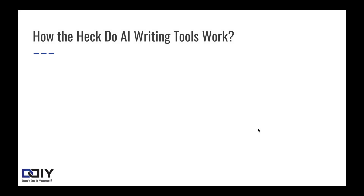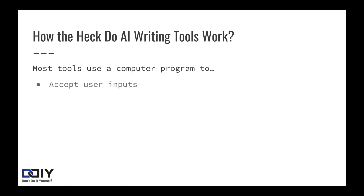So how do AI writing tools work? Simply put, an AI writing tool is software that uses artificial intelligence to generate content like a blog post, product description, or even a story. There's a lot going on behind the scenes, but the end result really isn't that complicated — it's all just inputs and outputs. Basically, most tools will use a computer program to accept a few user inputs, like a keyword, a phrase, or even a paragraph of content, and feed them into an AI engine.